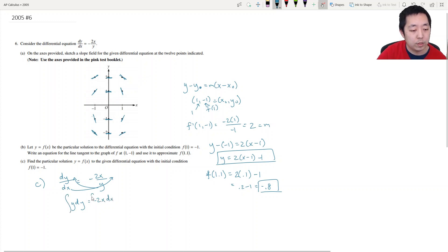And then I integrate both sides. 1 half y squared is equal to negative, oops, negative x squared. Negative x squared plus c. Yeah. And then so I multiply by 2. So y squared is equal to negative 2x squared. 2 times a constant is still just a constant. So y is equal to square root of negative 2x squared plus c.